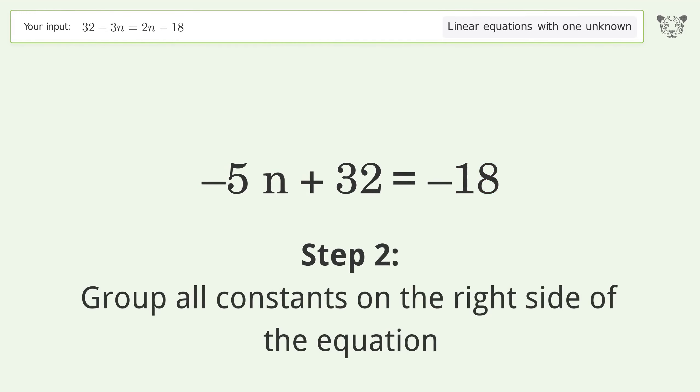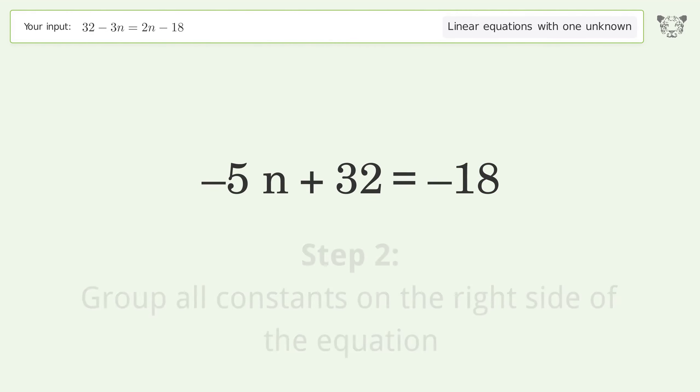Group all constants on the right side of the equation. Subtract 32 from both sides.